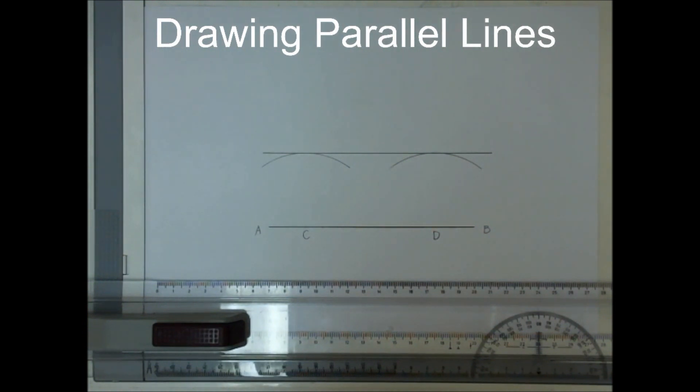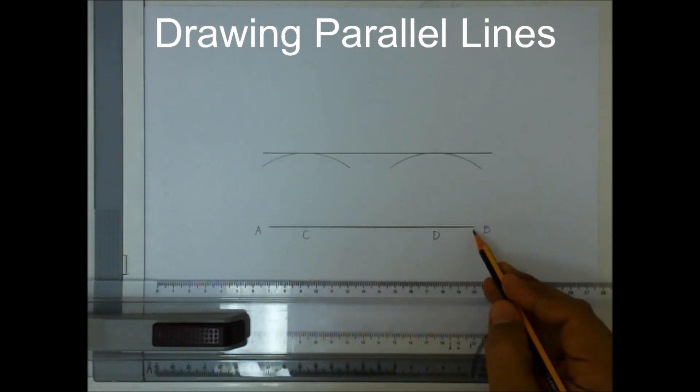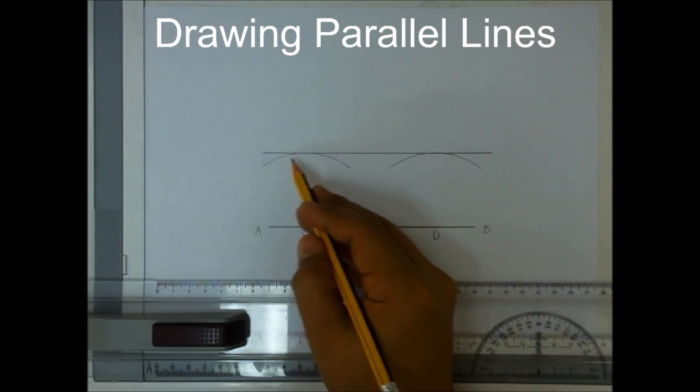Now, we have parallel lines here. This line AB is parallel with our line right here.